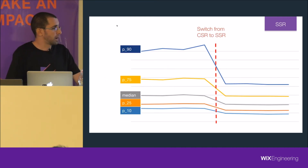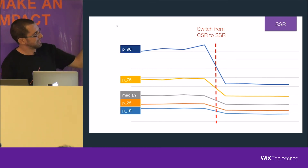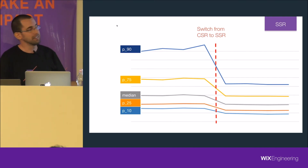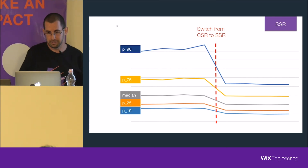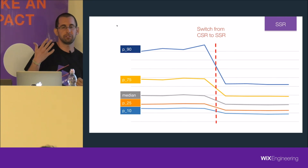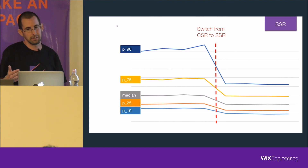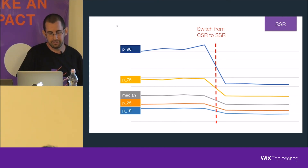This is what SSR did for us at Wix. You can see the drop — it's a good drop — talking about loading time, time to visible, and it's an improvement of about 60 to 70% across all percentiles. Of course, this is only about the first page load. Any other navigation inside the site happens like any other single page application — only the client. We don't go to the server to paginate inside the site.